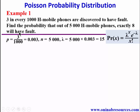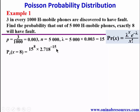Since we are looking for the probability of exactly 8 having a fault, x = 8. So P(X=8) = 15⁸ × 2.718^(−15) / 8!. Simplifying this gives 0.01947 to four significant figures, which represents the probability that out of 5,000 mobile phones, exactly 8 will have a fault.